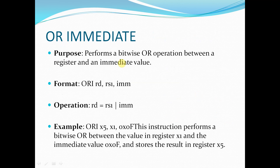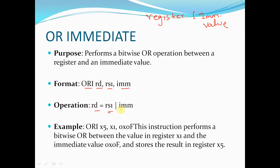Next is the ORI — OR Immediate instruction. We are going to perform the OR operation between the source register and the immediate value. The format is: ORI RD, RS1, immediate — and the operation is RD = RS1 OR immediate. It performs the OR operation between the value in RS1 and the immediate value provided, and stores the result in RD.